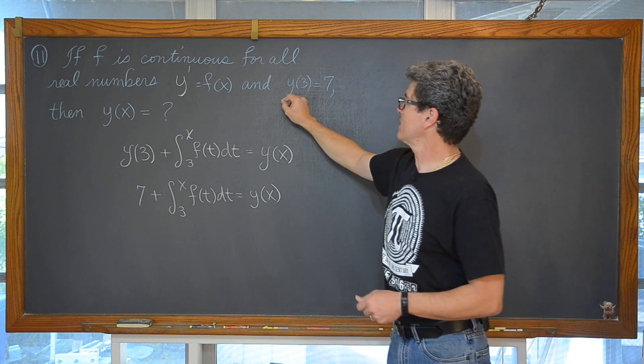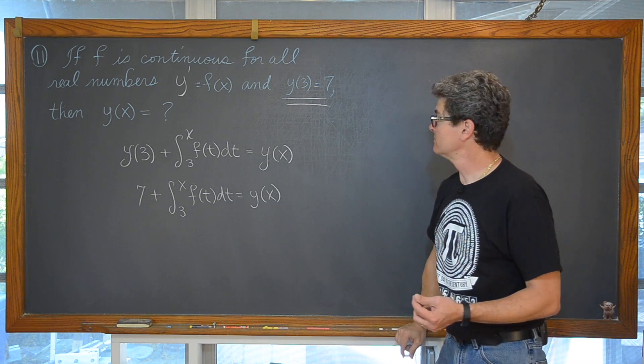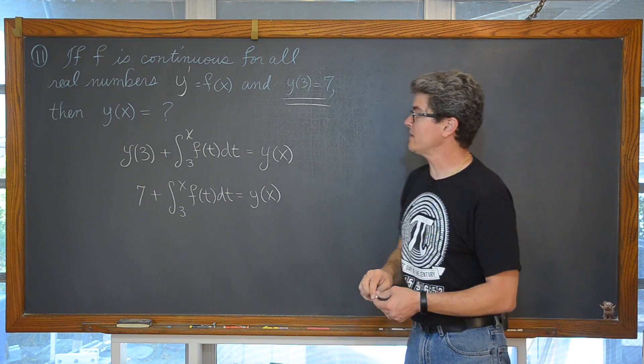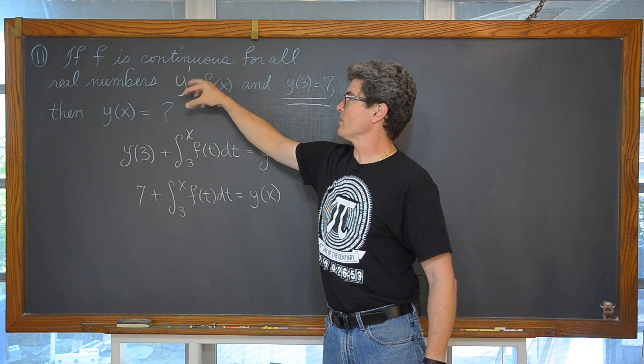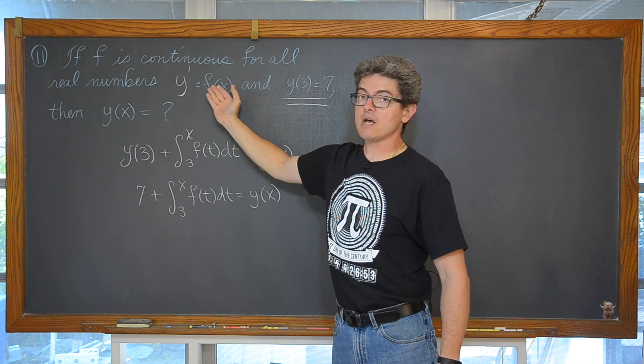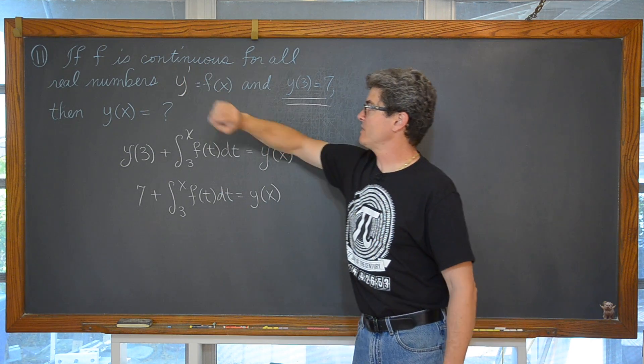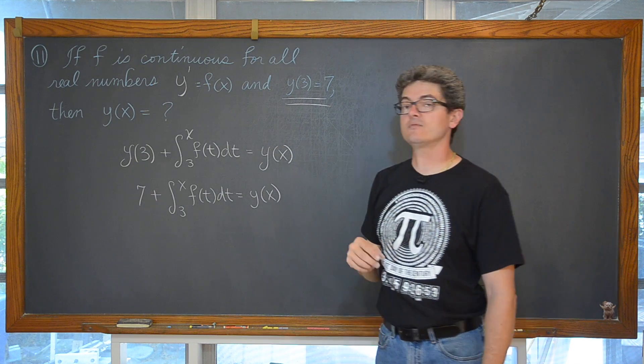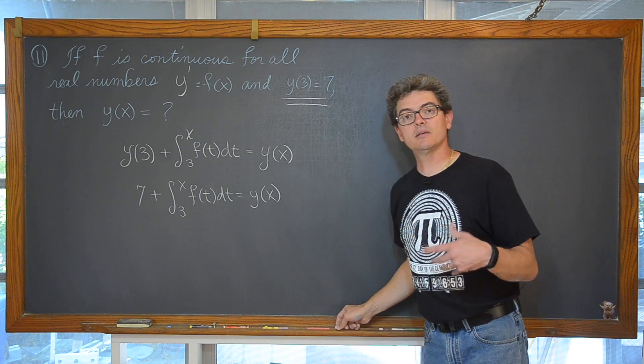And we have, like I pointed out in that opening example, that initial condition of y is equal to 7. So this really is yet again the net change theorem. We are given a function which is basically a weird way of being given a derivative of a function y prime which is f. If we have some information or if we want to write some kind of integral involving y prime, the rate of change of y, integrate that rate of change and you get an amount of change.